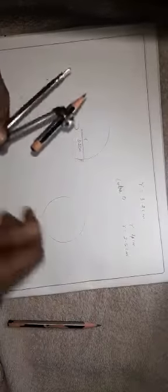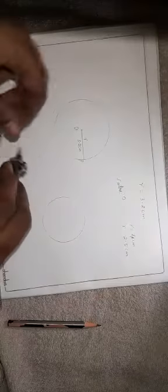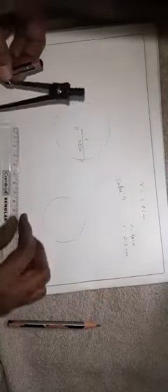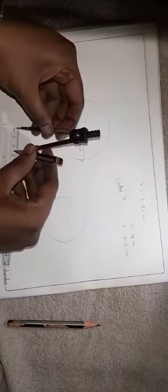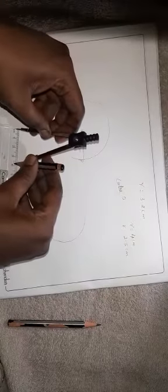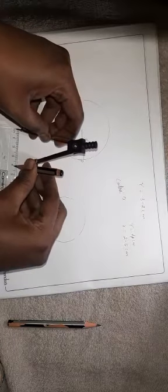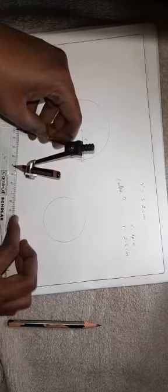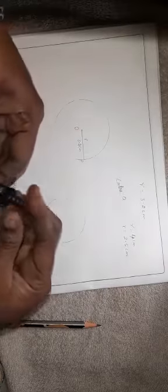One more radius they have given in the question. That is 4 centimeters. Again, take your scale. Compass point should be on 0. Next, 4 centimeters. That you know all. 4 centimeters have taken.